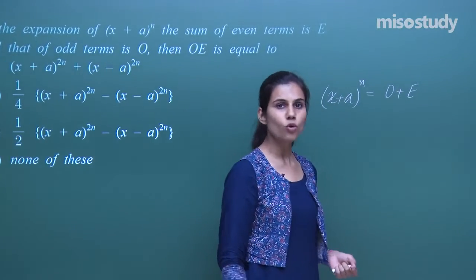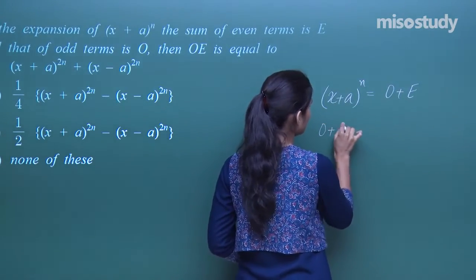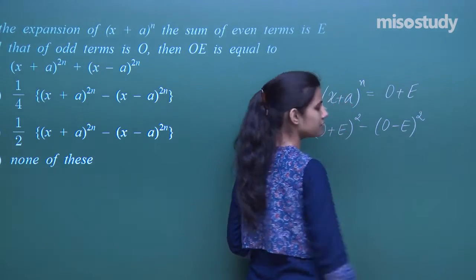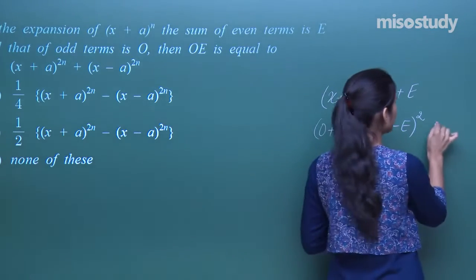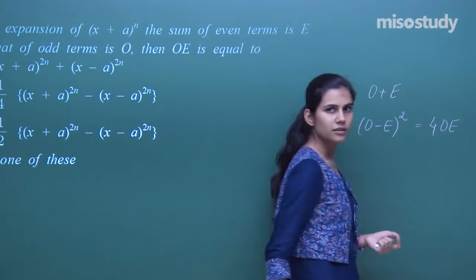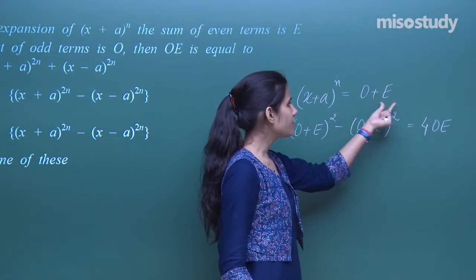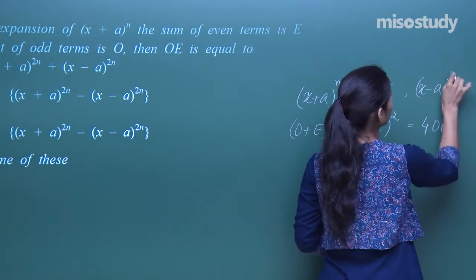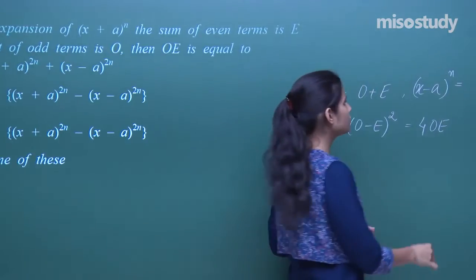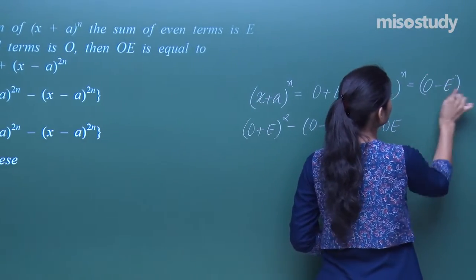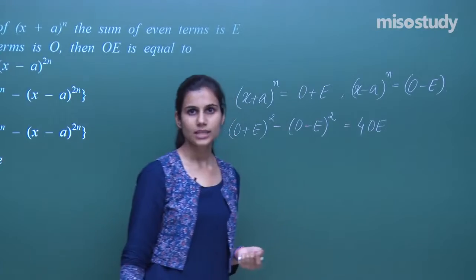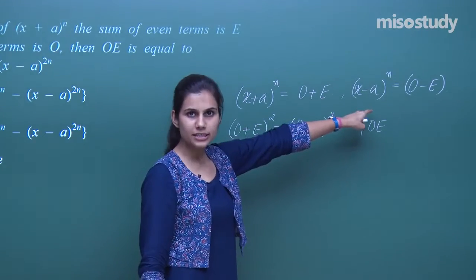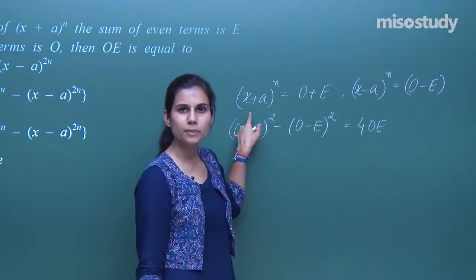I am being asked to compute OE. Observe that (O + E)² - (O - E)² equals 4·OE. You know that (x + a)^n is the sum of even plus odd terms. If I talk about (x - a)^n, this equals O - E. That's how the expansion of (x - a)^n differs from (x + a)^n.